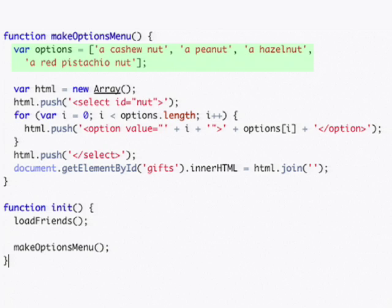Next we create another function, MakeOptionsMenu, which takes a list of gifts that we specify and creates it into a menu so that we can select a gift to give to our friend.